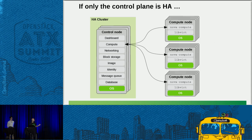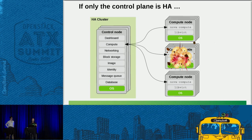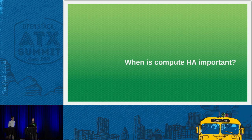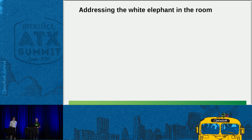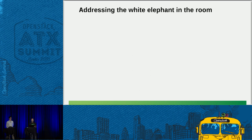That's basically the picture on the left-hand side: the control plane is highly available, but you still have the challenge that if a compute node fails, things can go wrong. So when is it important to do something about this kind of failure mode? Do we really need to care about it? Some people say we don't. For the benefit of any non-native English speakers, the 'white elephant' is an uncomfortable topic that no one really wants to talk about, so they leave it in the corner of the room and pretend it's not there. We're not going to do that today.